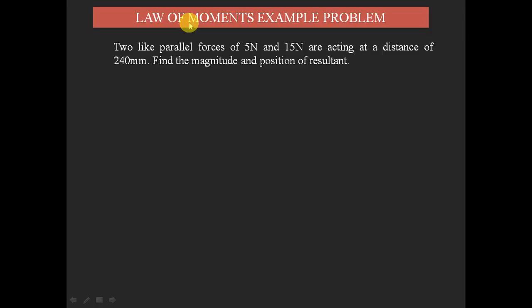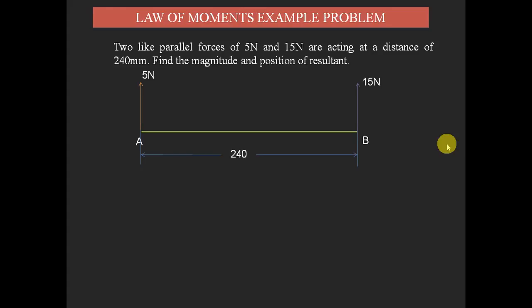Welcome to RN Tutorials. We are going to discuss one example problem on the law of moments. By applying the law of moments, we are going to find out the position of the resultant. The problem involves two light parallel forces — 5 newtons and 15 newtons — acting at a distance of 240 mm on a body, represented as a straight line AB. We need to find out the magnitude of the resultant force.